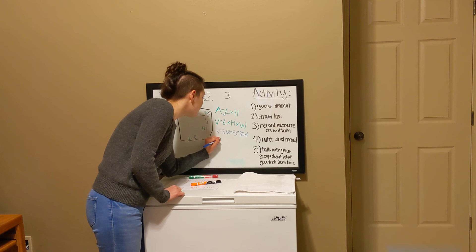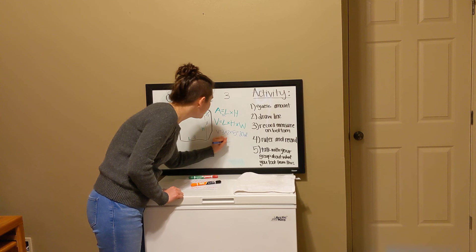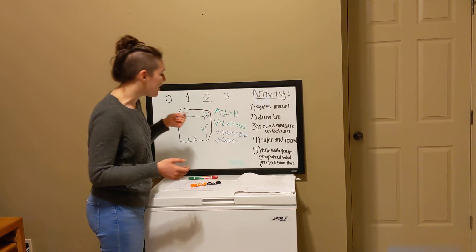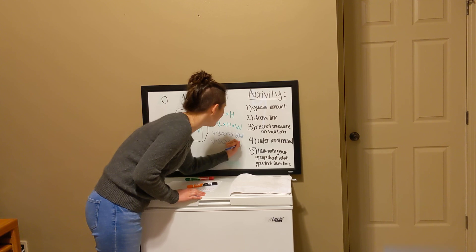Alright. Tyler, what is our volume? 8 times 2 times 3. Wyatt, do you know how much that equals? 48. What unit? Meters cubed.